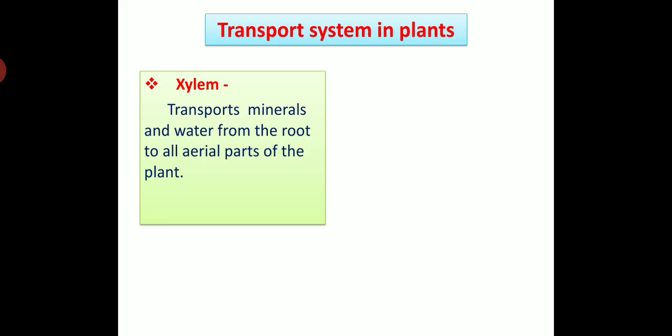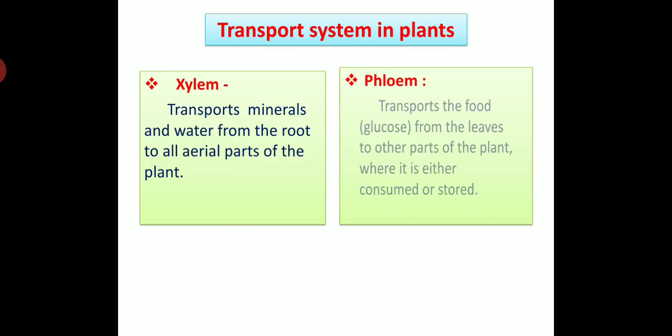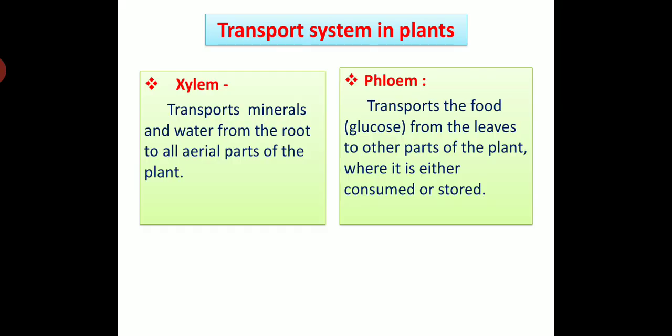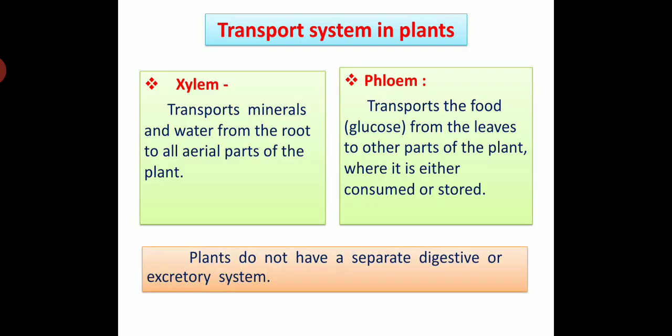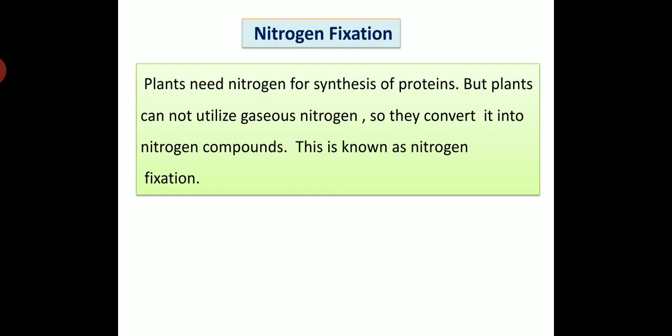Xylem: xylem transports minerals and water from the root to all aerial parts of the plant. And second, phloem: phloem transports the food or glucose from the leaves to the other parts of the plant where it is either consumed or stored. Plants do not have a separate digestive or excretory system.